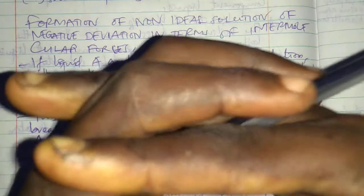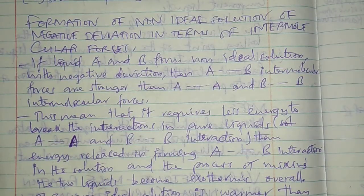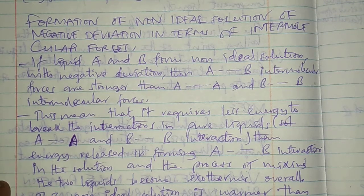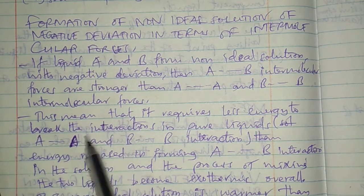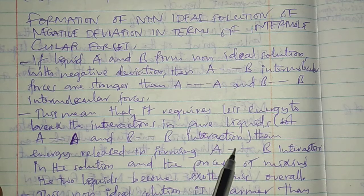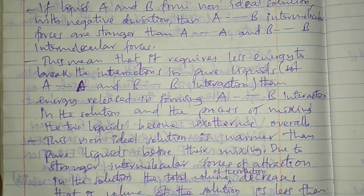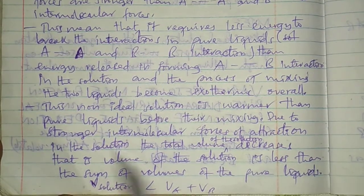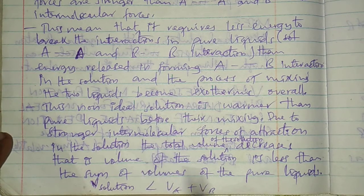Due to the stronger intermolecular force of attraction, the volume tends to decrease - the volume of the solution will be lower compared to the volume of the pure liquids. Also, in terms of heat changes, the energy used to break bonds is smaller compared to the energy released during formation of bonds. So the process of forming the solution is exothermic. Less energy is needed to break AA and BB interactions than the energy released when forming A-B interactions, making the overall mixing process exothermic.